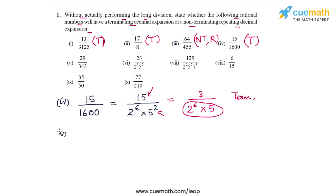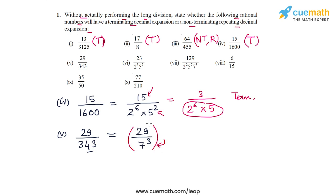Part 5 is 29/343. Now 343 is the cube of 7, so the prime factorized form of 343 is simply 7^3. This number has a denominator with prime factors other than 2s and 5s, so it will have a non-terminating repeating decimal expansion.